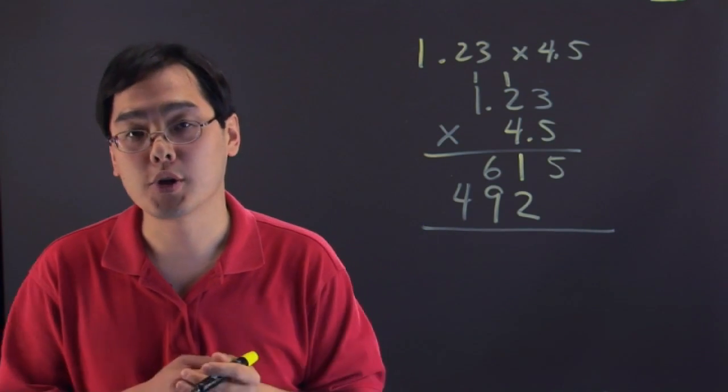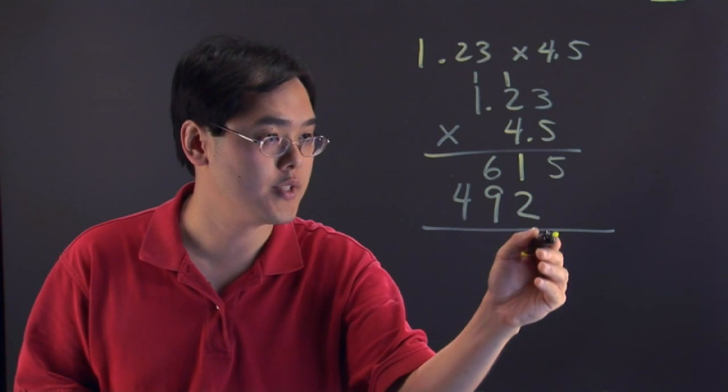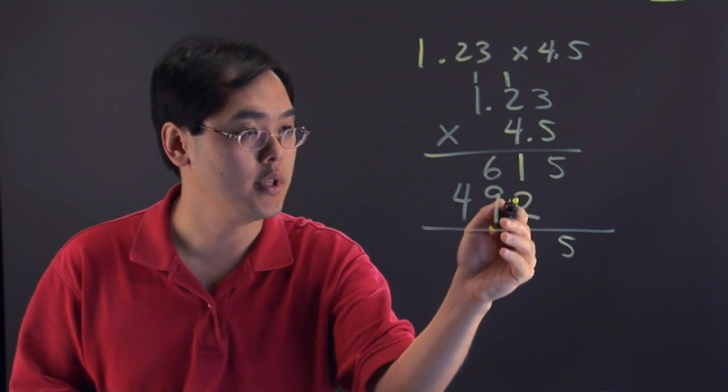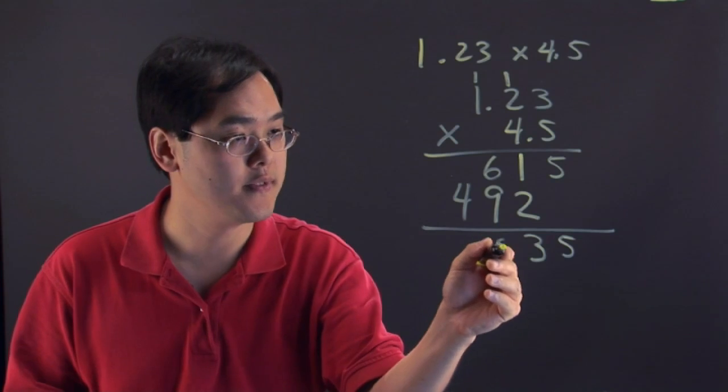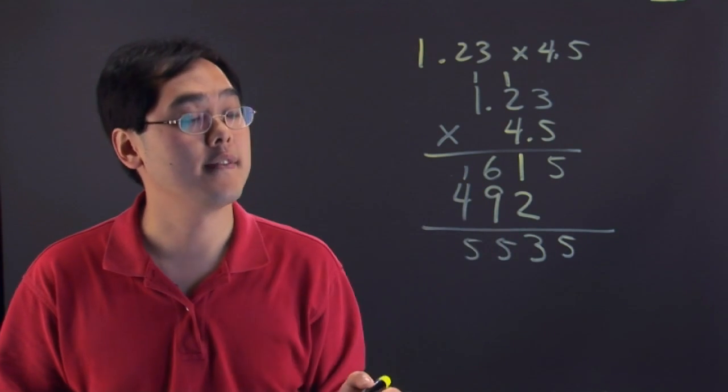Now, as you know with long multiplication, you would just add the rows that you have. So 5 plus 0 is 5. 1 plus 2 is 3. 6 plus 9 is 15. Carry the 1. 1 plus 4 is 5.